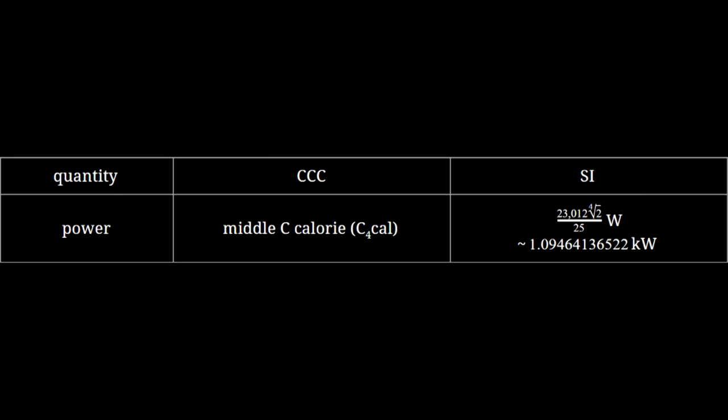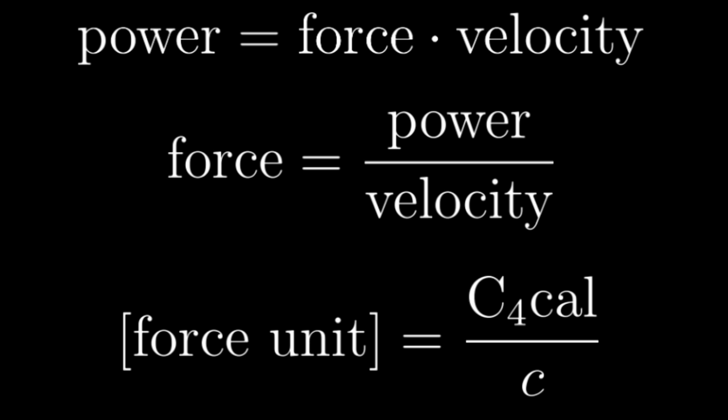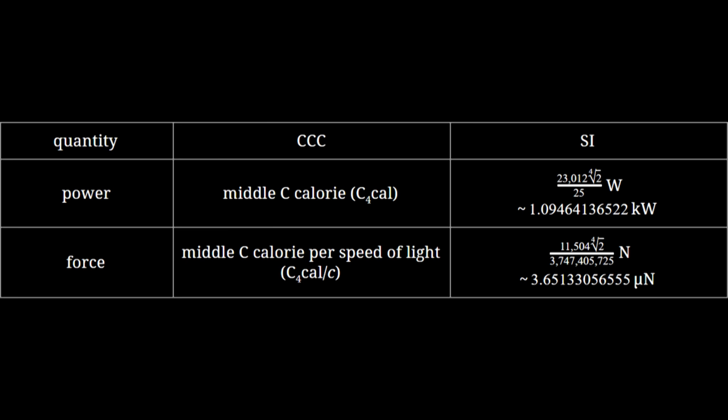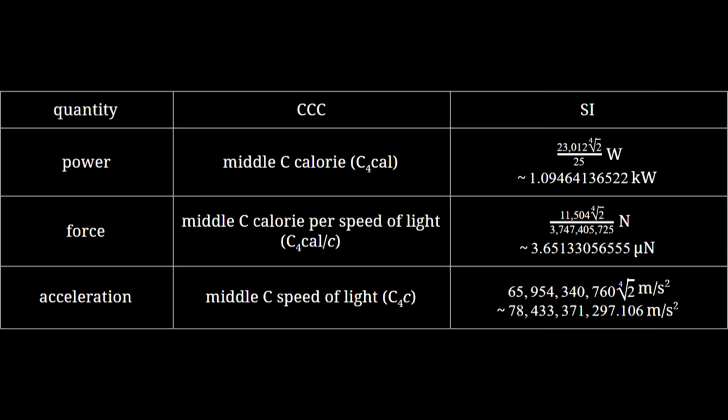Power is equal to energy over time, but it's also equal to force times velocity. That naturally means that in the CCC system, force is measured in middle C calories per speed of light. That's about 3.7 micronewtons. And now that we have a unit of force, we can finally figure out what this system's equivalent of newtons per kilogram is. Somewhat expectedly, the unit of acceleration is expressed as frequency times velocity, which is really just another way of saying velocity over time.